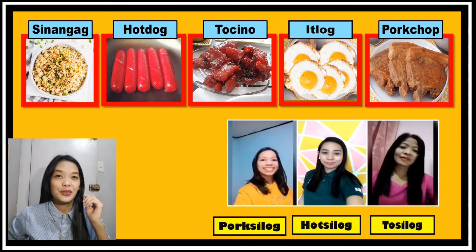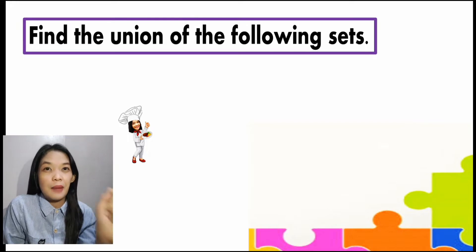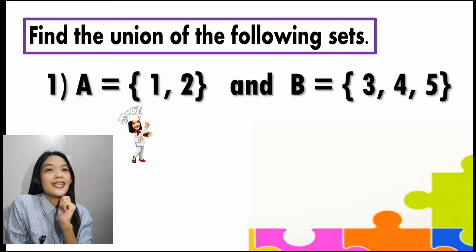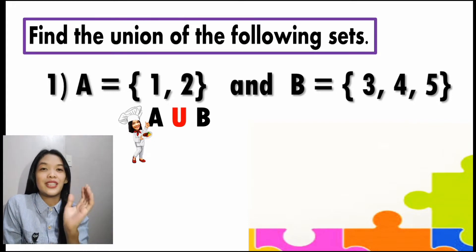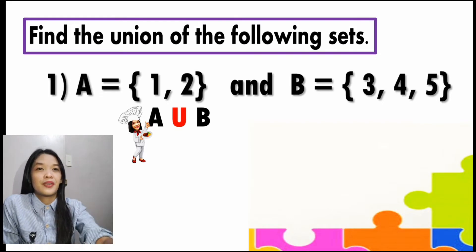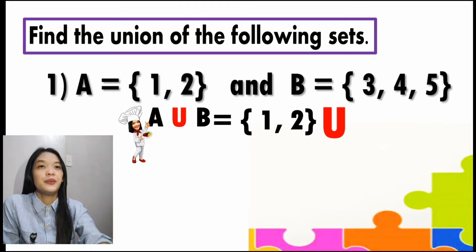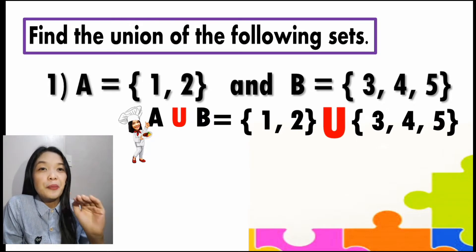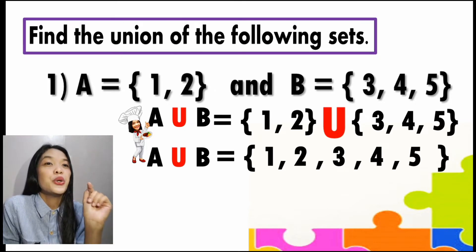So that is how union of sets is all about. From different sets, we're combining them as one. Let us have specific examples. Find the union of the following sets. Set A has the elements 1 and 2, and set B has the elements 3, 4, and 5. Now we're going to find A union B. Remember from its definition, you need to combine the elements. So we have elements in A — 1 and 2, then the symbol for the union, then write the elements of B — 3, 4, and 5. Combine the elements. Therefore A union B will be 1, 2, 3, 4, and 5.